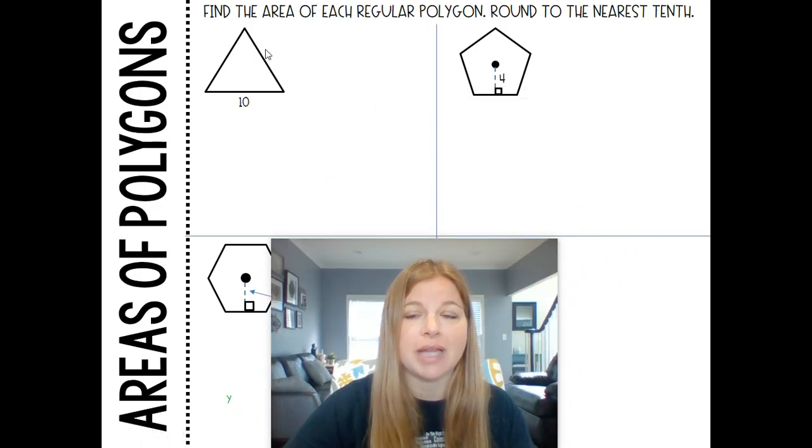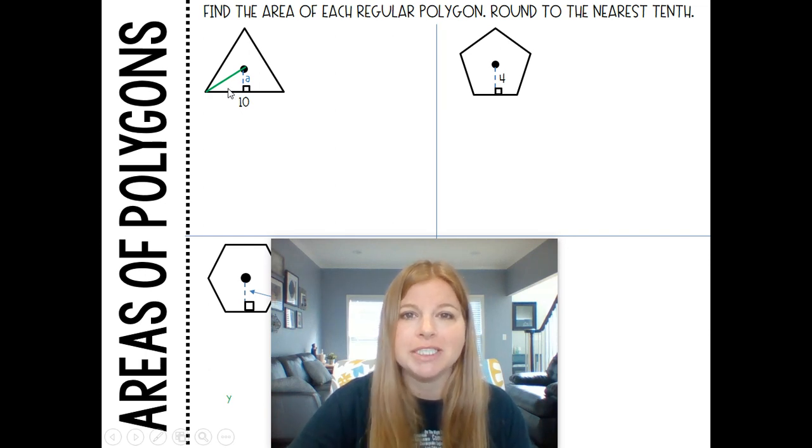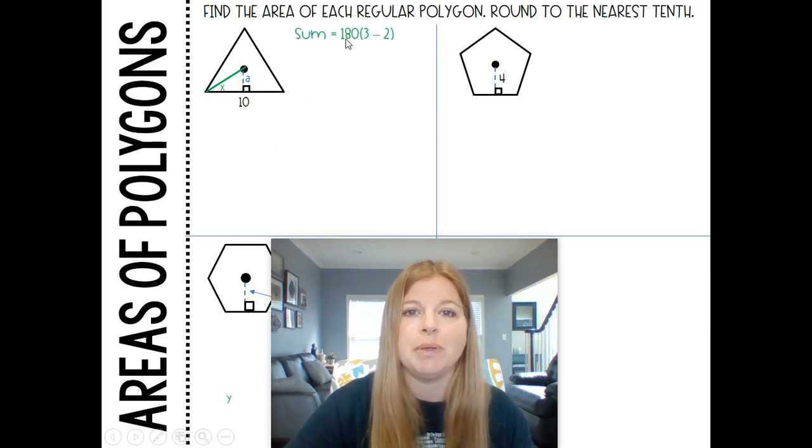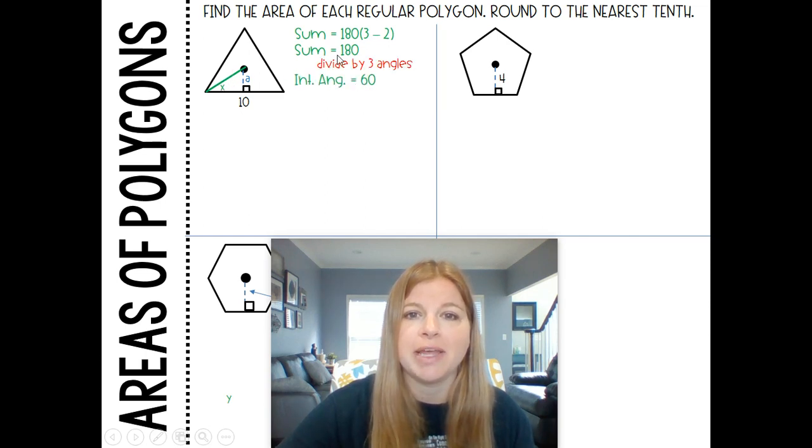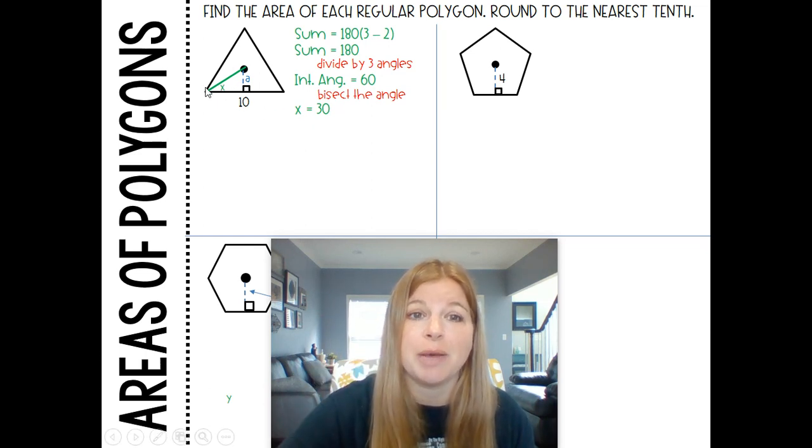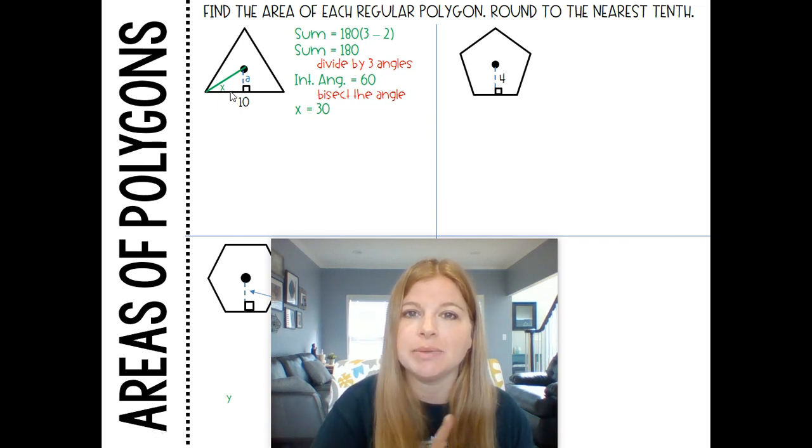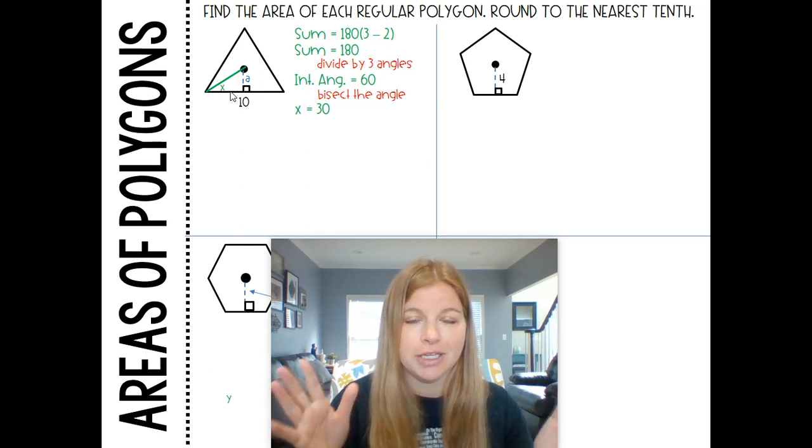Here we have this equilateral triangle, and I see that a side is 10. I need to figure out this apothem length. I need to also figure out, if I was to construct a right triangle in here, what this angle is. It would be 180 times the number of sides minus 2, that ends up just giving us 180. If there's 180 degrees and I divide that by three angles, then each interior angle is 60. Then I need to bisect it to get this little angle of 30. What should ring in your head is that this actually does become a 30 60 90 triangle.